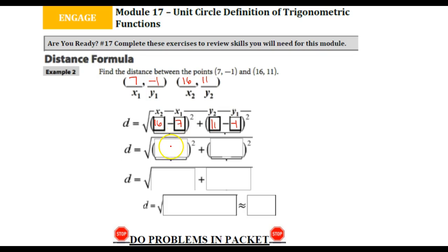16 take away 7 would be 9. And 11 minus a negative 1 would be positive, which would be 12. And then if I squared this, that would be 9 squared is 81.